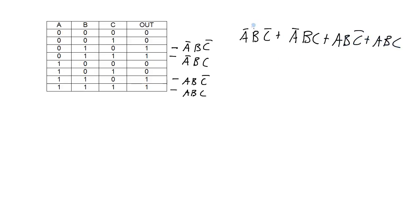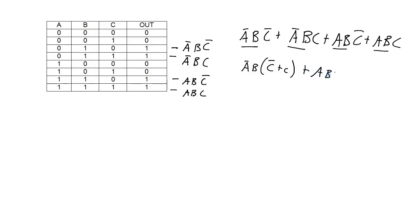So we get an expression that equals our output. Then the next thing we can do is do some Boolean algebra simplification. I can look for some terms in common that I can factor out. In this term I've got NOT A, B. In this term I've got NOT A, B that I can factor out. So I have NOT A, B, ANDed with NOT C or C. Over here I've got an A, B and an A, B term, so I can factor that out: A, B, ANDed with NOT C or C.